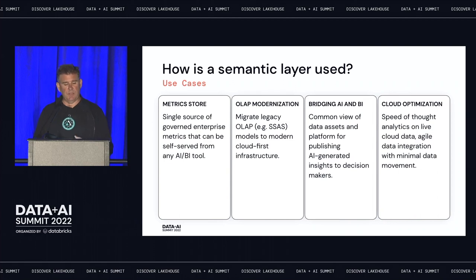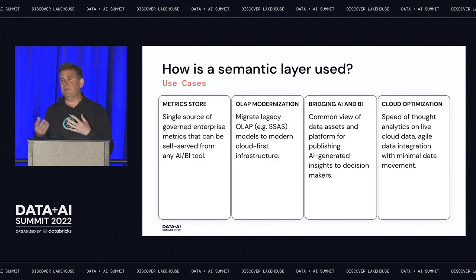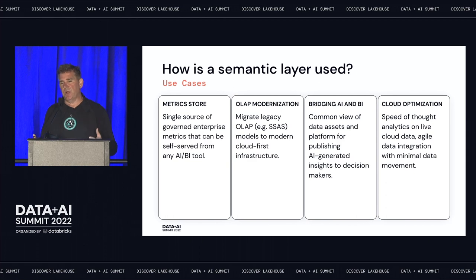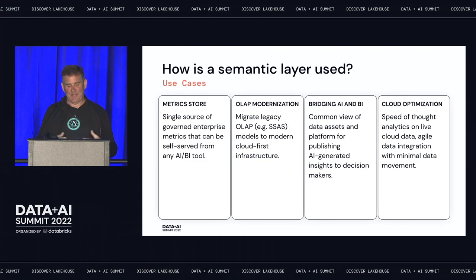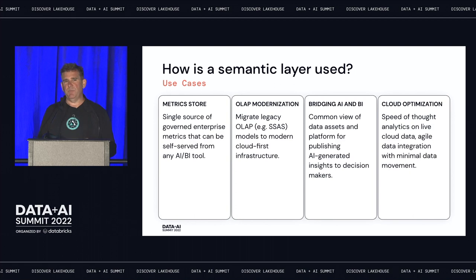These are some of the use cases for a semantic layer. You might be hearing about a metric store — that's just another synonym for a semantic layer. DBT is talking about a semantic layer. Google with Looker is talking about a semantic layer. Companies like Cube.io are talking about headless BI. Those are all synonyms. The semantic layer in AtScale's case is fully multidimensional — that's key to making data approachable, because business speaks in terms of measures, dimensions, and hierarchies.